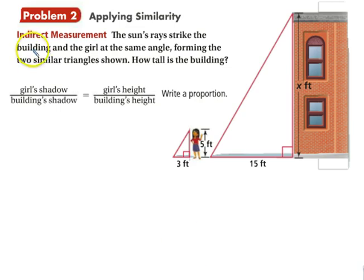Something called indirect measurement. We can use the information provided in this picture. The sun's rays strike the building and the girl at the same angle, forming shadows. We want to find out how tall the building is. We know the girl is 5 feet and she casts a 3-foot shadow. The building casts a 15-foot shadow.